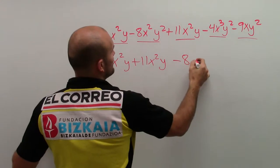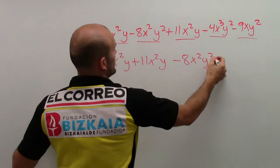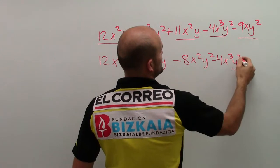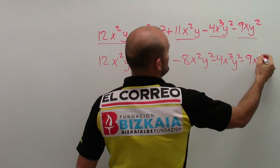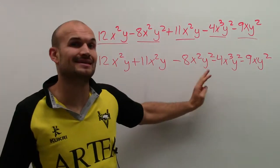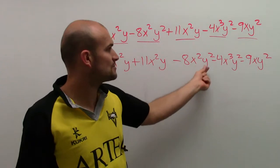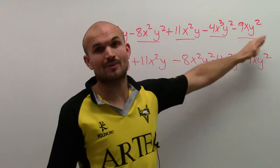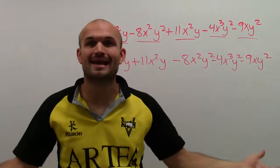And then I have negative 8xy squared minus 4x cubed y squared minus 9xy squared. And I take a look at each one of these, and I notice they're all unique. They're all different. Here's x squared y squared, here's x cubed y squared, here's xy squared. None of them are the same, so I can't combine them.